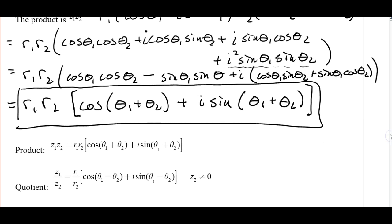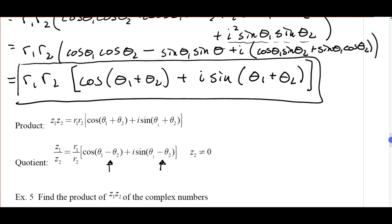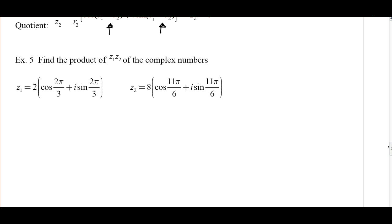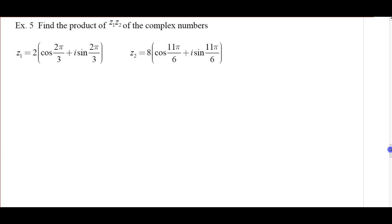We have two formulas — one for the product and one for the quotient. Notice that for the quotient we use the difference formula instead of the sum formula. Go ahead and try the examples remaining in the packet, and I'll have the solutions for you in class. Check those and make sure you ask any questions you have. We'll see you next time.